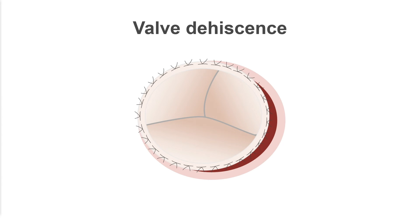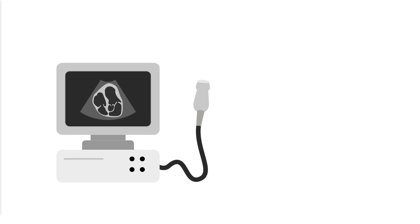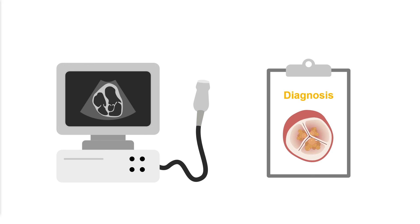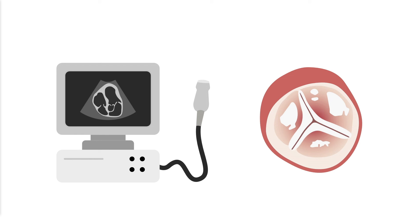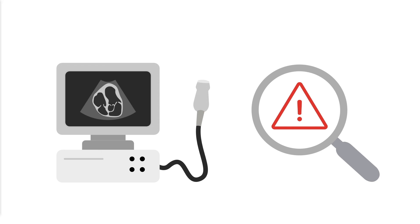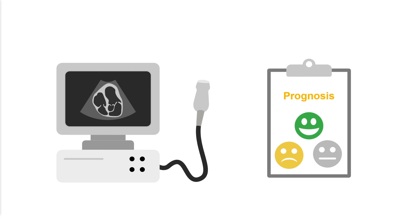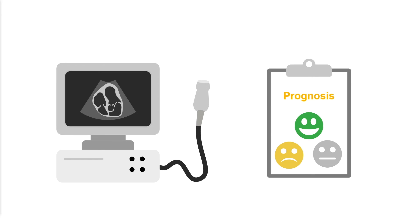Valve dehiscence is evidenced by the presence of paravalvular regurgitation, indicating that the edge of a prosthetic valve has started to come loose from its suture line due to infection in that region. Beyond establishing a diagnosis, echocardiography can also provide information about pre-existing abnormalities, help identify complications, assist in prognostication, and predict embolic risk.